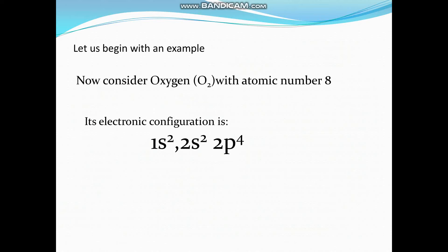Let us consider an example oxygen with atomic number 8. Its electronic configuration is 1s2, 2s2, 2p4.